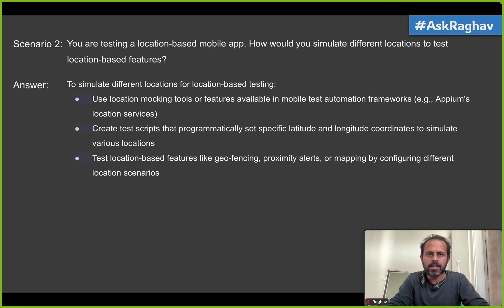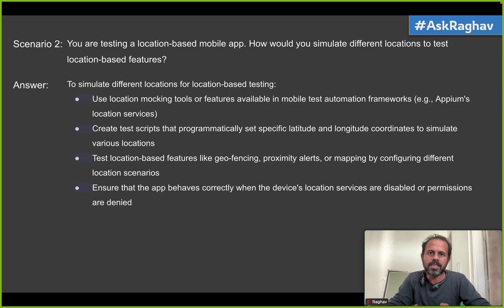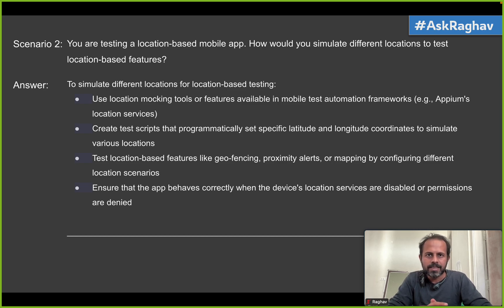For example, if you think about Google Maps and you search for 'hotels near me,' it checks your location and gives you suggestions. Make sure you can test these kinds of features. A very important thing is to also make sure that when users have disabled location on their devices, the app should still perform correctly and not give any incorrect results. If notifications are needed, it should notify the user that it cannot perform that action because location services are disabled — but it should not behave incorrectly.